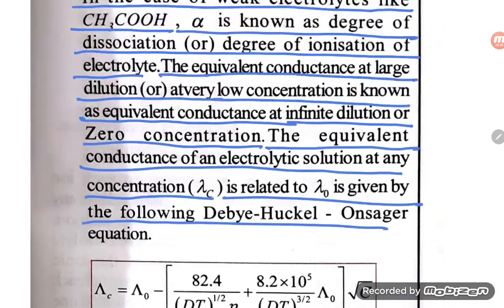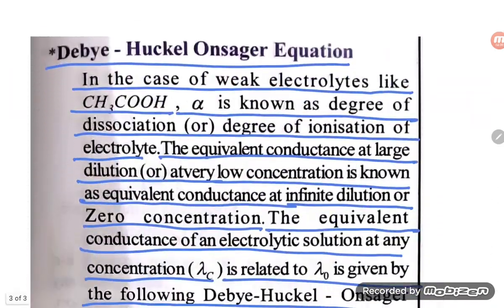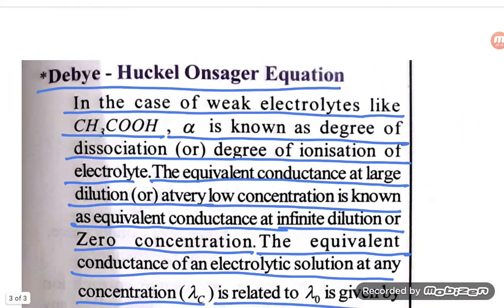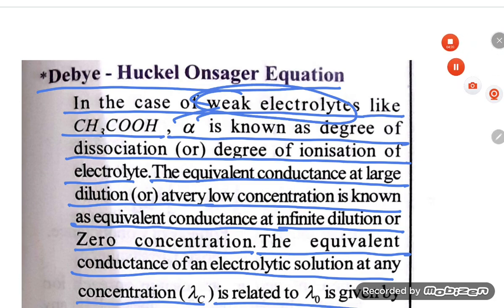So we understand this equation is given for weak electrolytes only. The Debye-Hückel-Onsager equation is only for weak electrolytes, and we will study this equation in detail in the lectures. Thank you so much for watching.